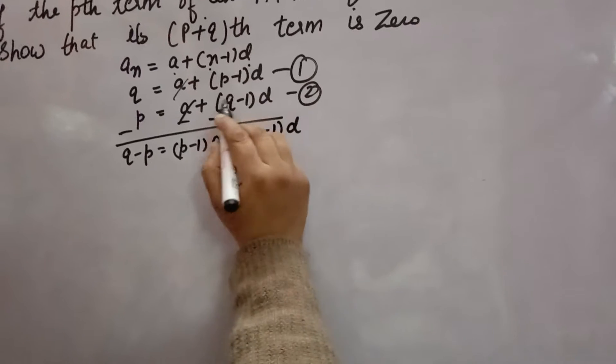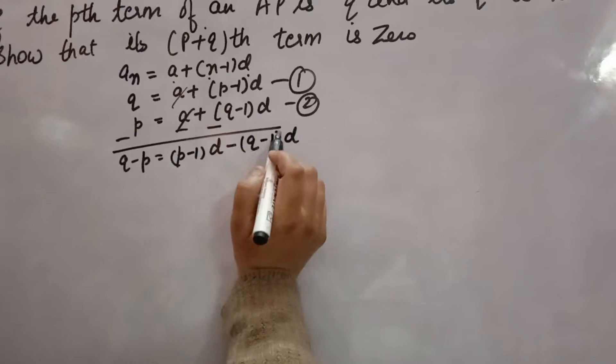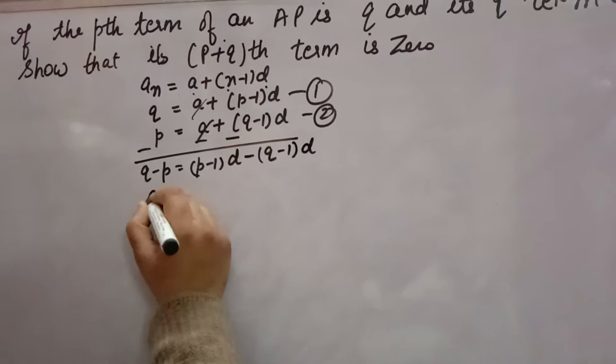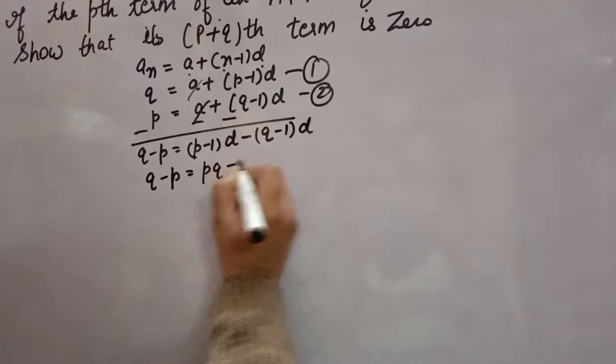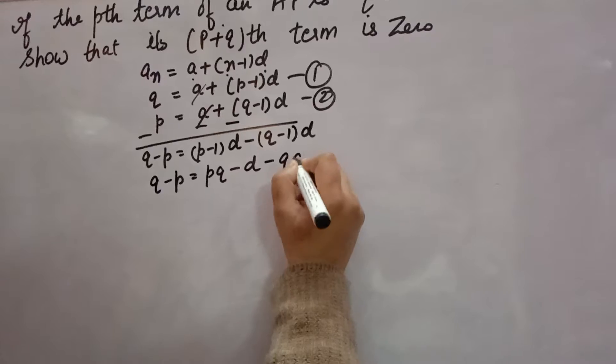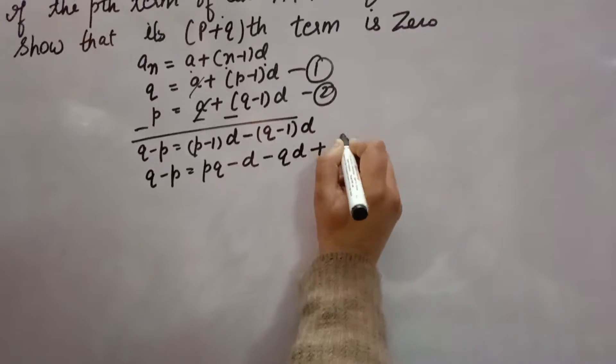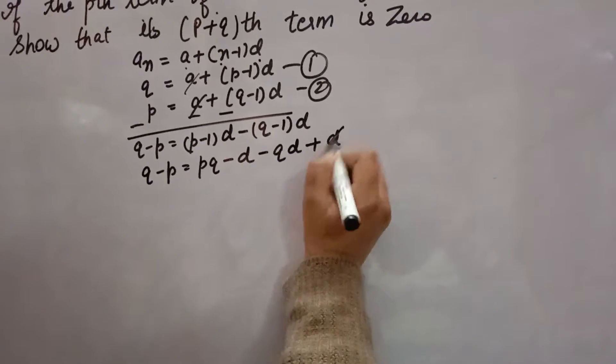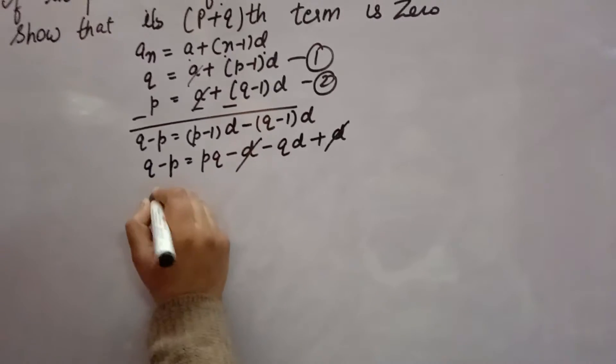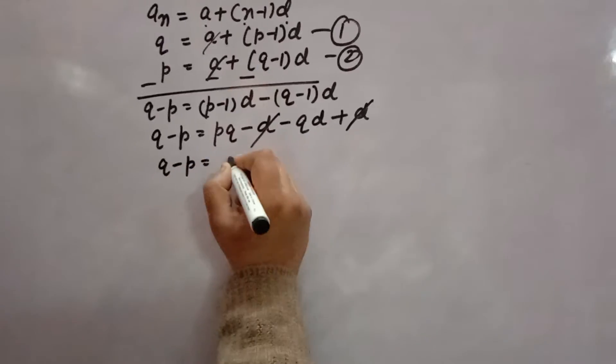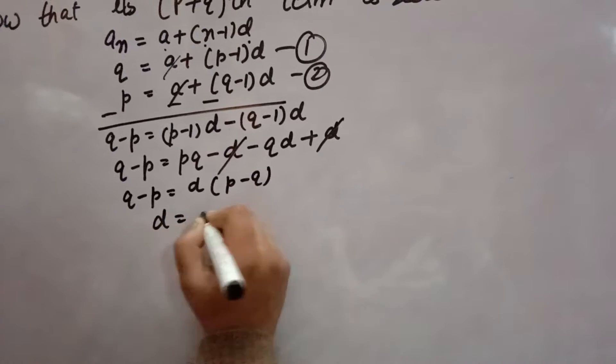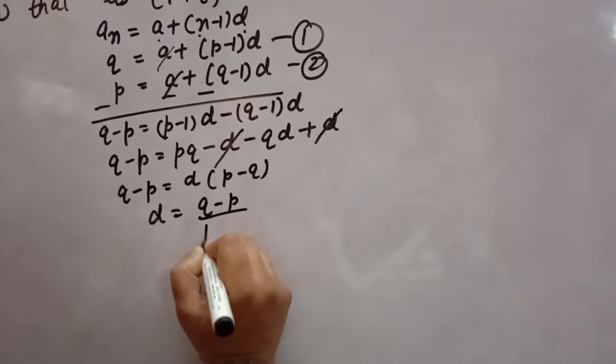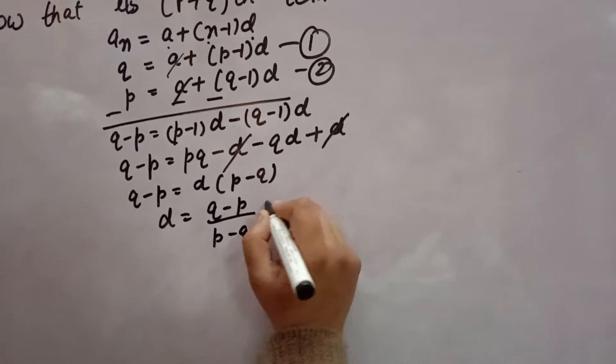Because the sign is changing, we can write it this way. Opening the brackets: pD - D - qD + D. The D terms cancel, giving Q - P = D(p - q).